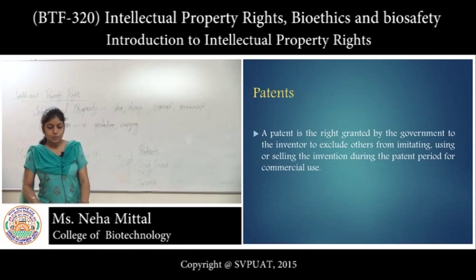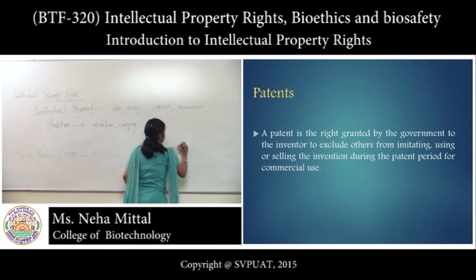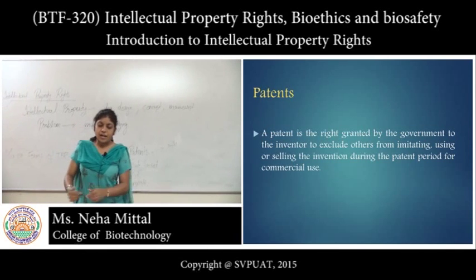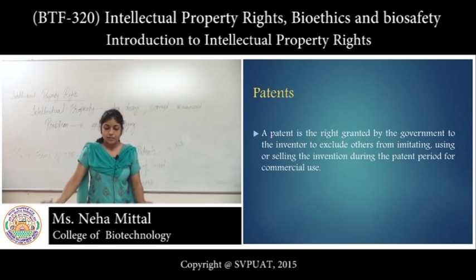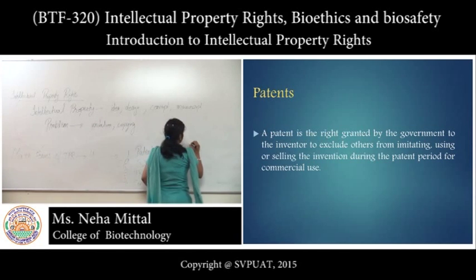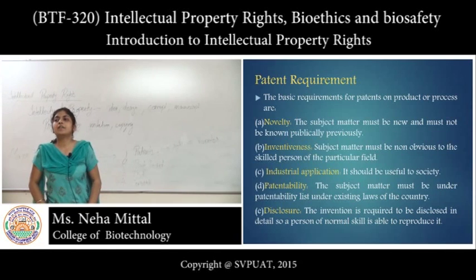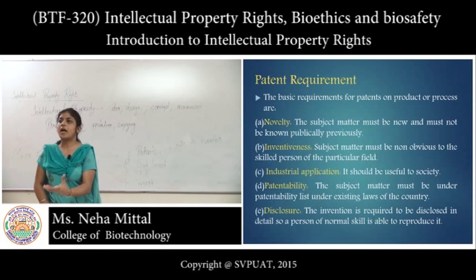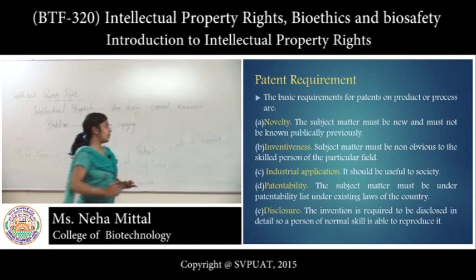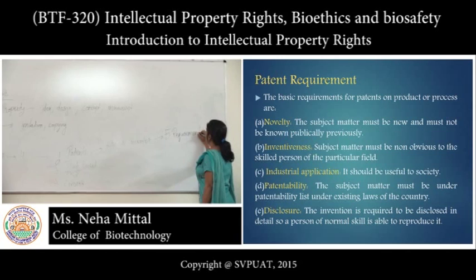First, let's talk about patents. A patent is a right granted by the government to exclude others from manufacturing, imitating, or selling the invention to the inventor. There is a general requirement criteria that must be fulfilled by the subject matter on which we are applying for a patent. The subject matter should fulfill five requirements for the grant of a patent.